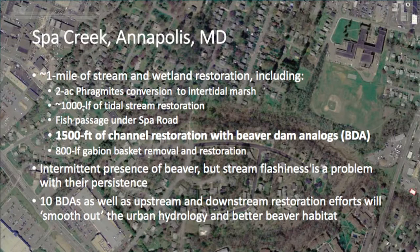There was an 800-foot gabion basket project that the city of Annapolis was wringing their hands about — they didn't want us to take it out, they loved their gabion baskets. It had cost a fortune to build and they were failing. We saw tiny wire mesh capsules littered for a thousand feet downstream of the gabion basket reach because they were failing and washing downstream.